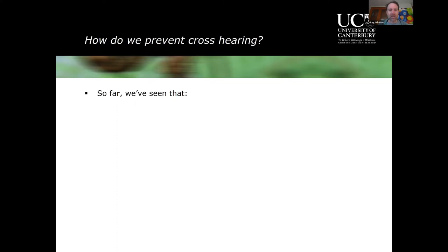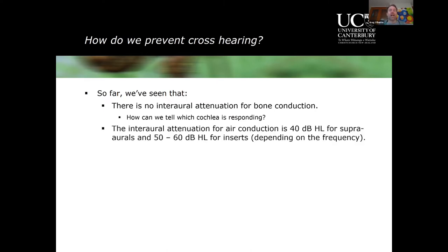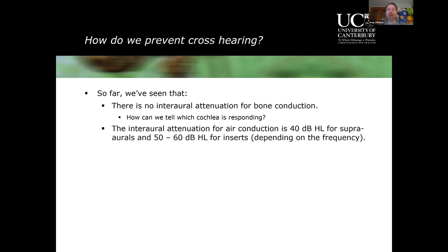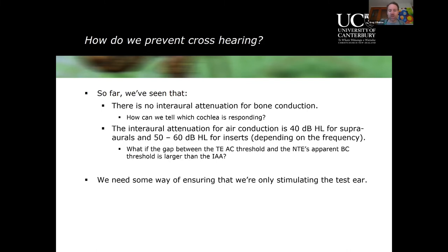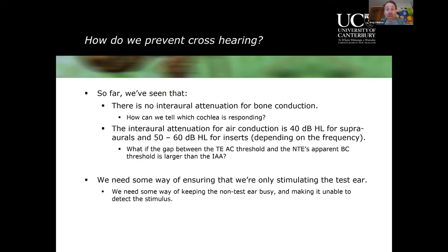How do we prevent cross hearing? For bone conduction, there is no interaural attenuation — play at 20 dB in one ear and it's 20 dB in the other. For air conduction with supra-aurals, it's 40 dB; with inserts, 50-60 dB conservatively. But if the gap between the air conduction threshold in our test ear and the bone conduction threshold in the non-test ear is larger than the interaural attenuation, we need some way of keeping the non-test ear busy — making it unable to detect those stimuli.